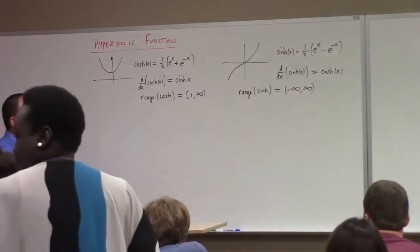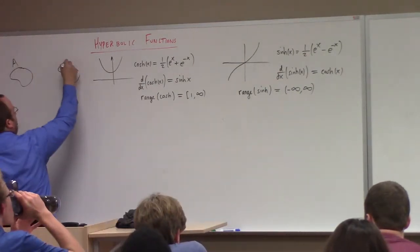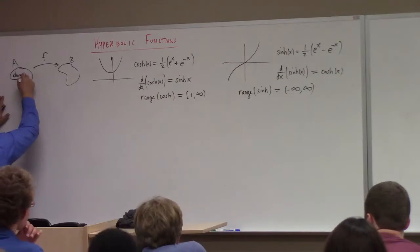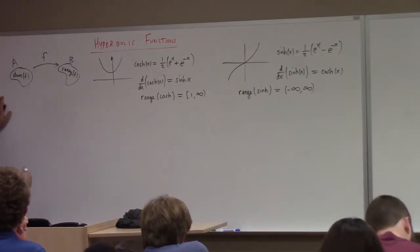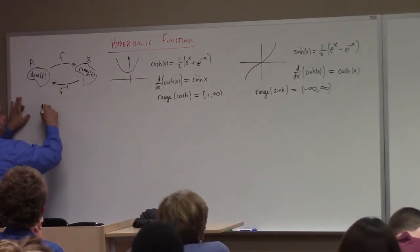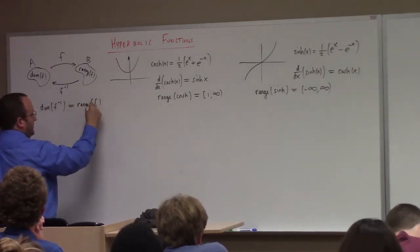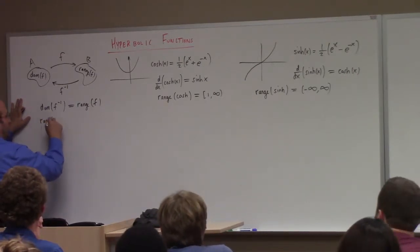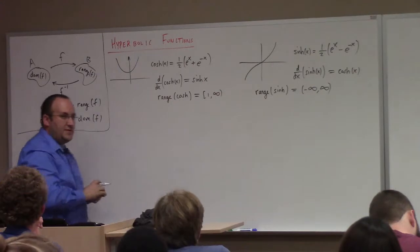Now, how does the inverse of a function work? If you have a function from set A to set B, and A is the domain of f and B is the range of f, the inverse function goes the other way. The domain of the inverse function is, in fact, going to be the range of the function, provided an inverse exists. And vice versa — the range of the inverse function should be the domain of the function.